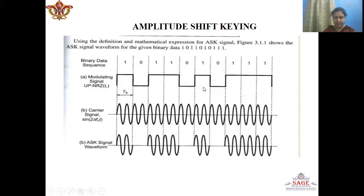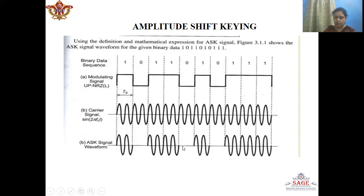We can show the Amplitude Shift Keying technique with the help of waveforms. The message signal has one represented by high level and zero represented by the negative level. The carrier signal is a high-frequency sinusoid with frequency F_c. In the ASK waveform, when the message is one, the ASK signal is represented by the carrier signal. Whereas when the message is zero, the ASK signal is represented by the zero voltage level. Again when the message is one, it is represented by the carrier signal, and for zero it has zero voltage level.